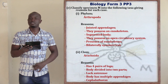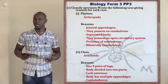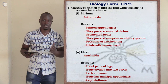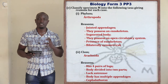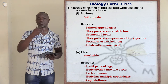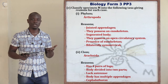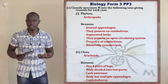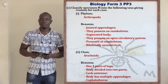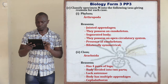Specimen M belongs to class Arachnida. Reasons: first, it has four pairs of legs; second, the body is divided into only two parts — head and cephalothorax (where thorax is fused with abdomen); and third, it lacks antennae, unlike organisms in other classes. These features confirm placement in class Arachnida.